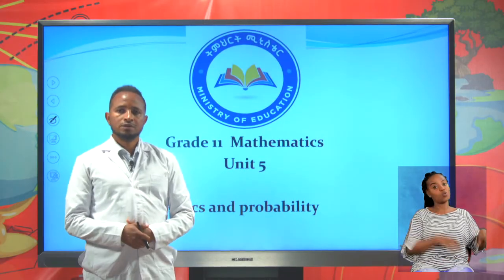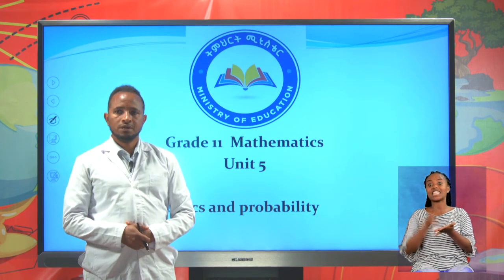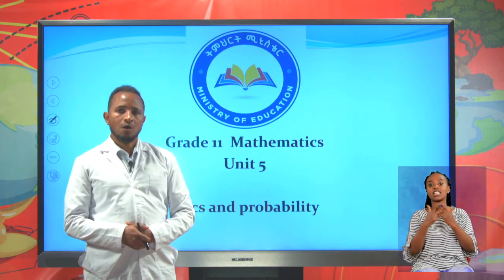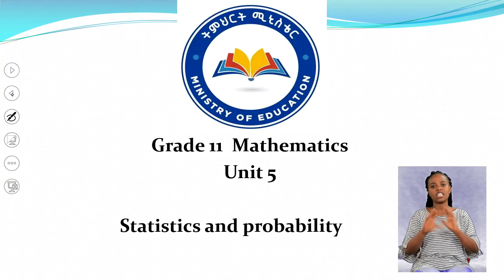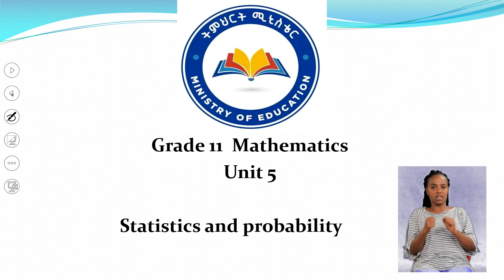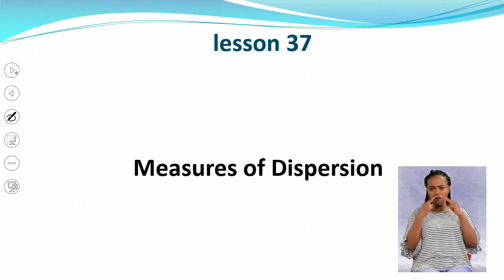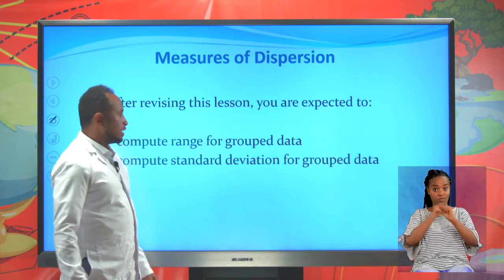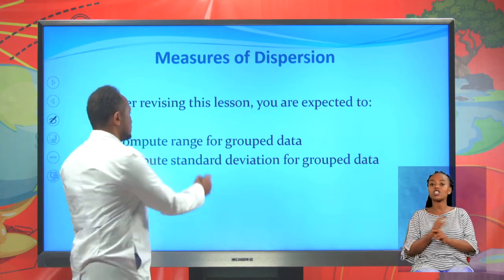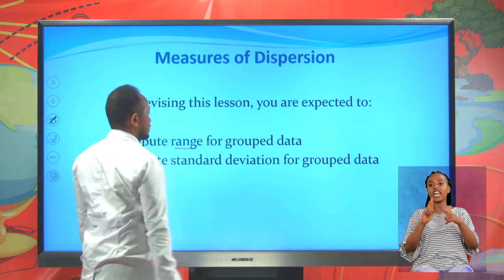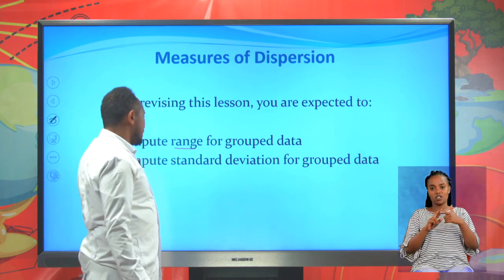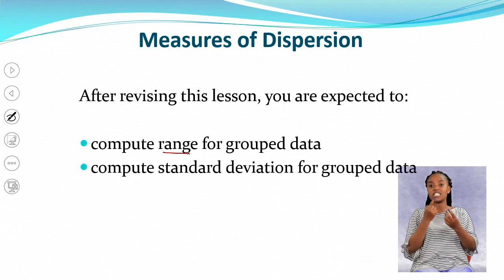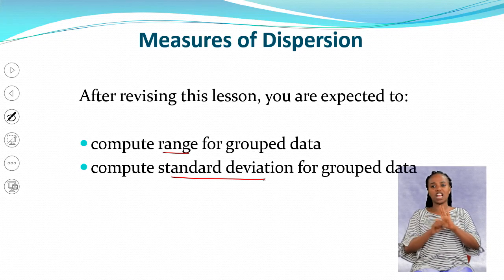Hello, dear students. This is a grade 11 mathematics lesson on unit 5, sub-unit 16, probability. Today we will focus on measures of dispersion. After revising this lesson, you are expected to compute range for grouped data and compute standard deviation and variance also for grouped data.